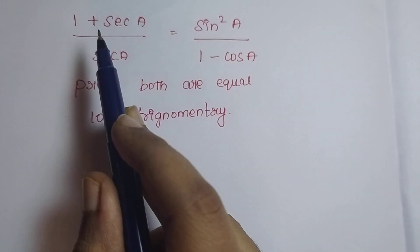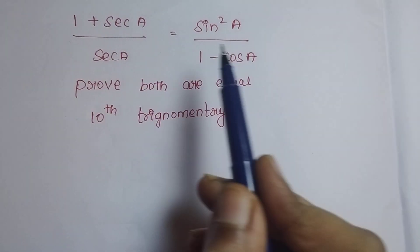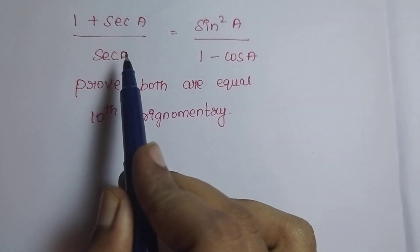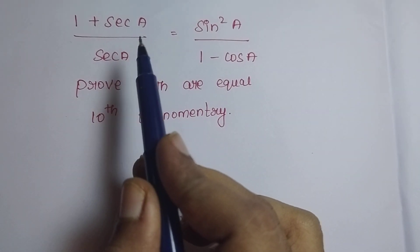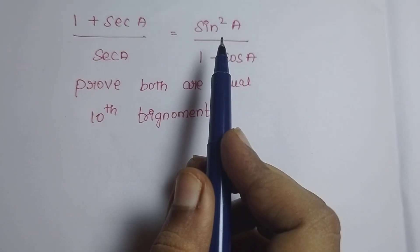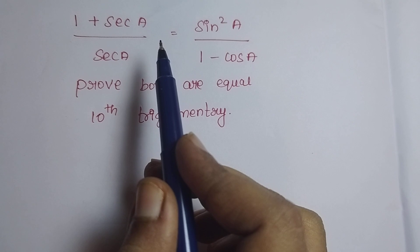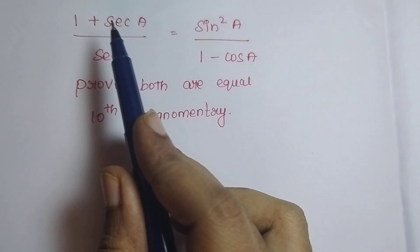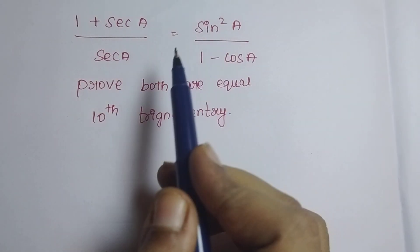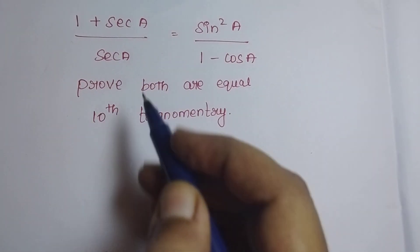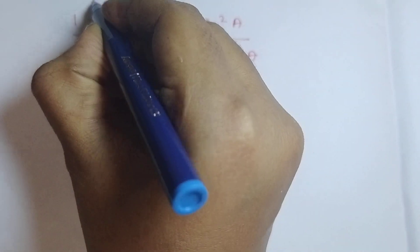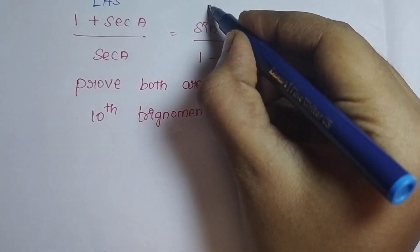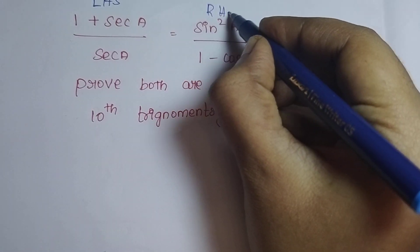In today's class I am going to solve this trigonometry equation. I am going to prove these two are equal. For that I am going to solve LHS and RHS separately. So I am going to consider this as LHS and this as RHS.